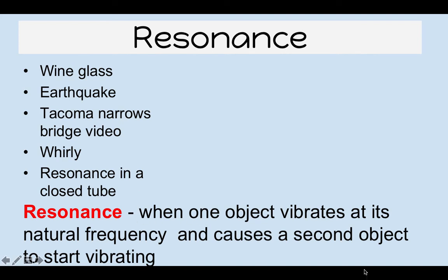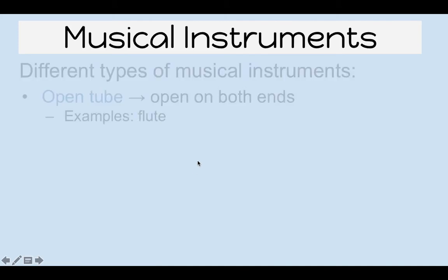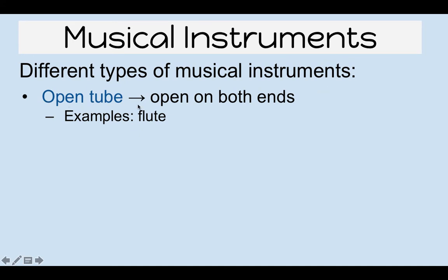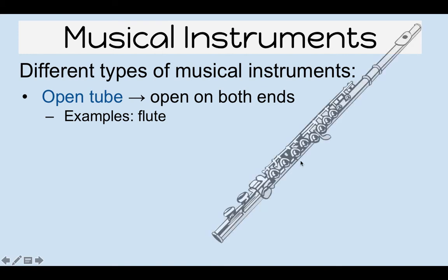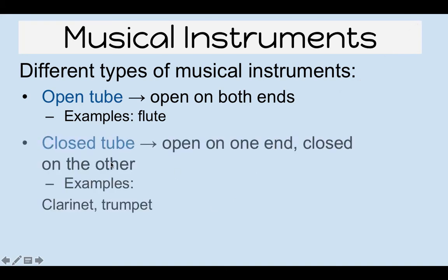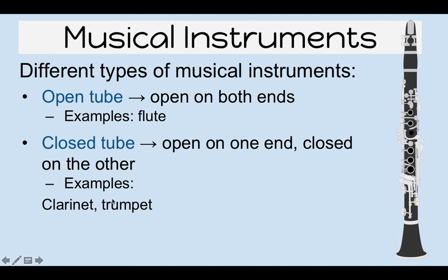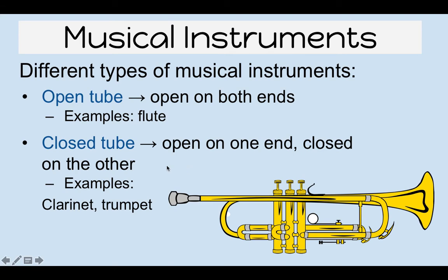Here's the definition of resonance: when one object vibrates at its natural frequency and causes a second object to start vibrating. Now let's look at some musical instruments. Some are open tube instruments, which are open at both ends — for example, a flute. We have one open end and another open end. There are also closed tube instruments, open on one end and closed on the other — examples include a clarinet and a trumpet. With these, you fully cover the lip, and only one side is open, creating a closed tube.